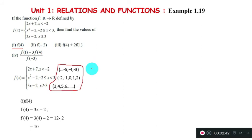For part (ii), f(-2): The value -2 falls in the second interval where -2 ≤ x < 3, so we use the function x²-2. Thus f(-2) equals (-2)² minus 2, which is 4 minus 2, giving us the answer 2.